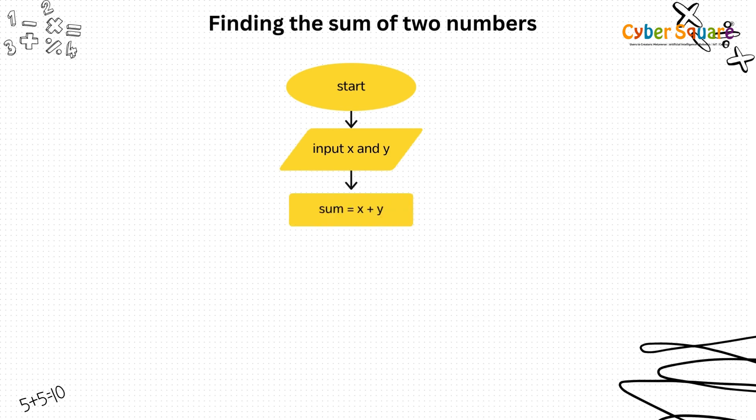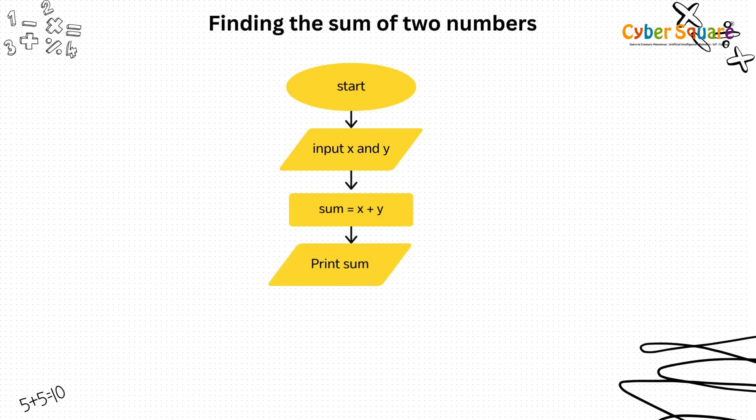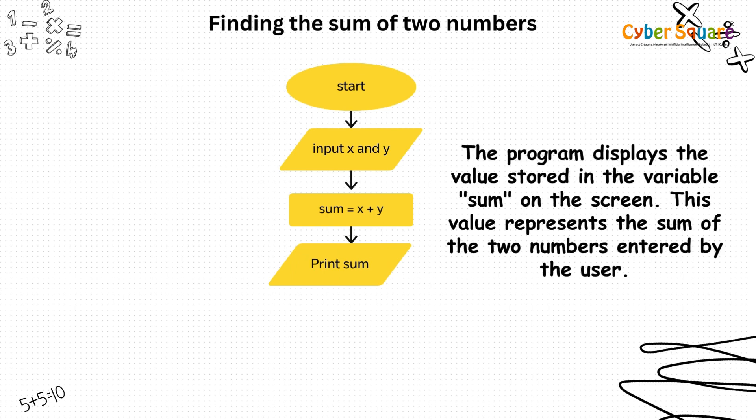Sum equals x plus y - the program calculates the sum of x and y and stores the result in a variable named sum. Print sum - the program displays the value stored in the variable sum on the screen. This value represents the sum of the two numbers entered by the user.